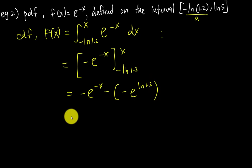This equals -e^(-x) + 1.2, but I don't like writing the negative term first, so I'll simplify it to 1.2 - e^(-x). This is my capital F(x), which is my CDF.